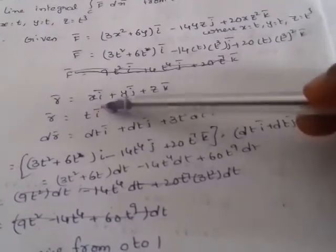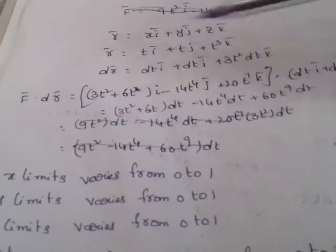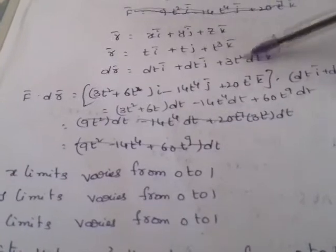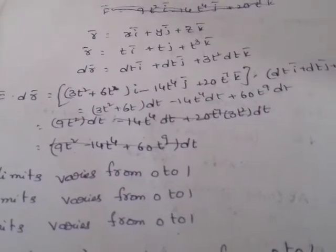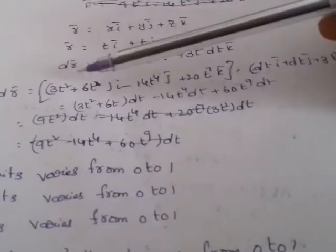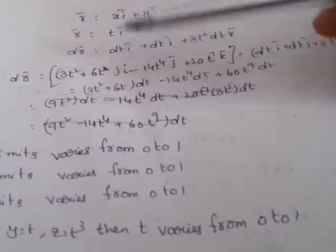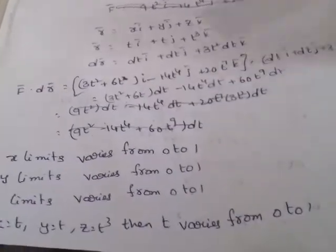R-bar = xi-bar + yj-bar + zk-bar = Ti-bar + Tj-bar + T³k-bar. Differentiating: dR-bar = dT·i-bar + dT·j-bar + 3T²·dT·k-bar = (i-bar + j-bar + 3T²k-bar)dT. Computing F-bar dot dR-bar: (3T² + 6T)·1 + (−14T⁴)·1 + 20T⁷·3T² = (3T² + 6T − 14T⁴ + 60T⁹) dT.